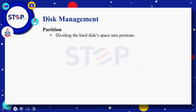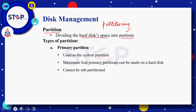Partition — جب بھی آپ اپنی hard disk کی space کو چھوٹے چھوٹے portions کے اندر divide کریں گے تو وہ چھوٹے portions آپ کی partitions کہلاتے ہیں۔ Types of partition — سب سے پہلے primary partition ہے جو as a system partition کے طور پر use ہوتی ہے۔ ایک hard disk کے اوپر maximum 4 primary partitions بنا سکتے ہیں اور اس کو further کسی اور partition میں divide نہیں کیا جا سکتا۔